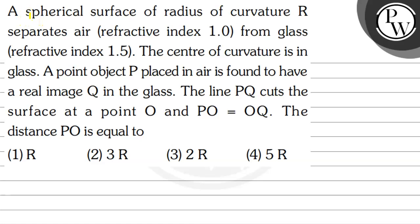Hello. Let's read the question. A spherical surface of radius of curvature R separates air, whose refractive index is 1, from glass, whose refractive index is 1.5. The centre of curvature is in glass. A point object P placed in air is found to have a real image Q in the glass. The line PQ cuts the surface at a point O and PO is equal to OQ. The distance PO is equal to: option 1: R, option 2: 3R, option 3: 2R, option 4: 5R.